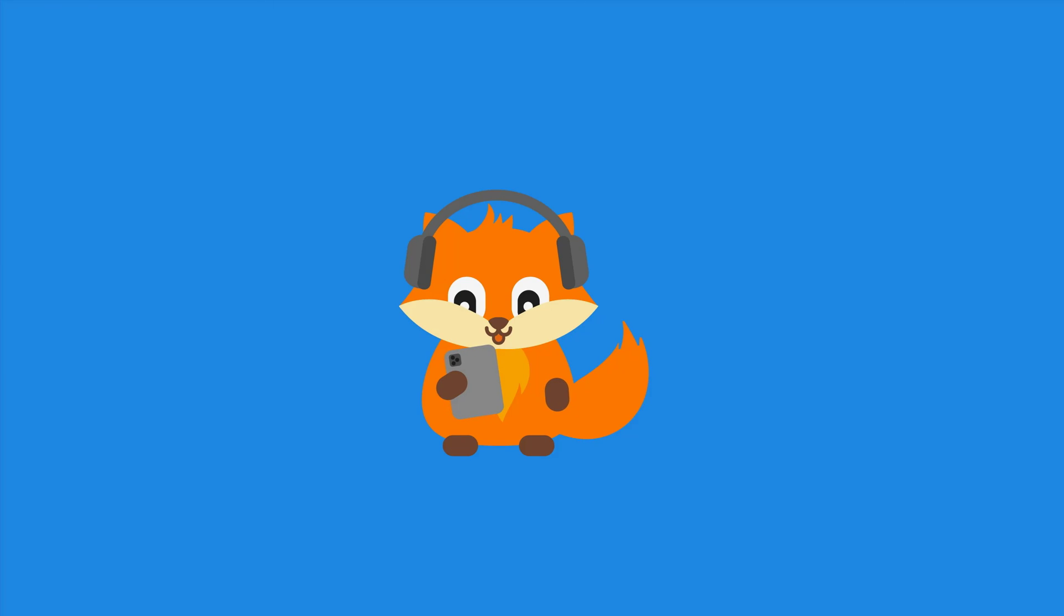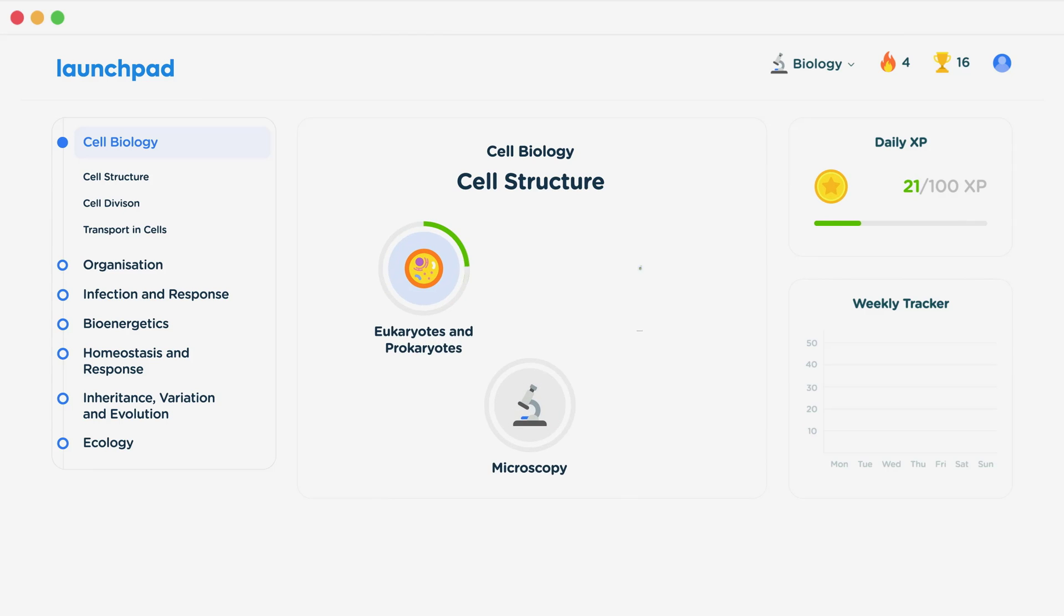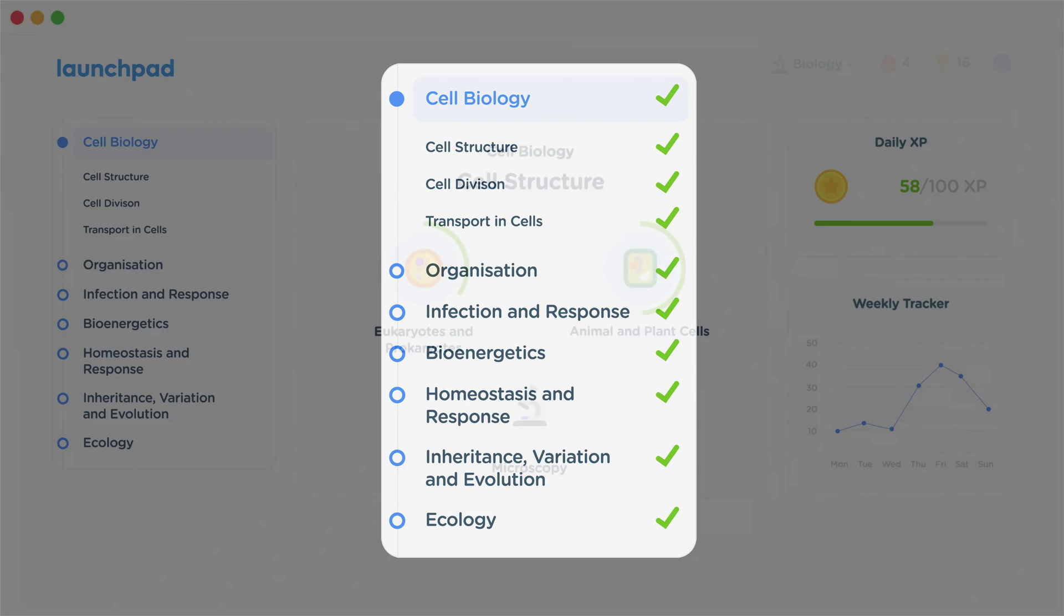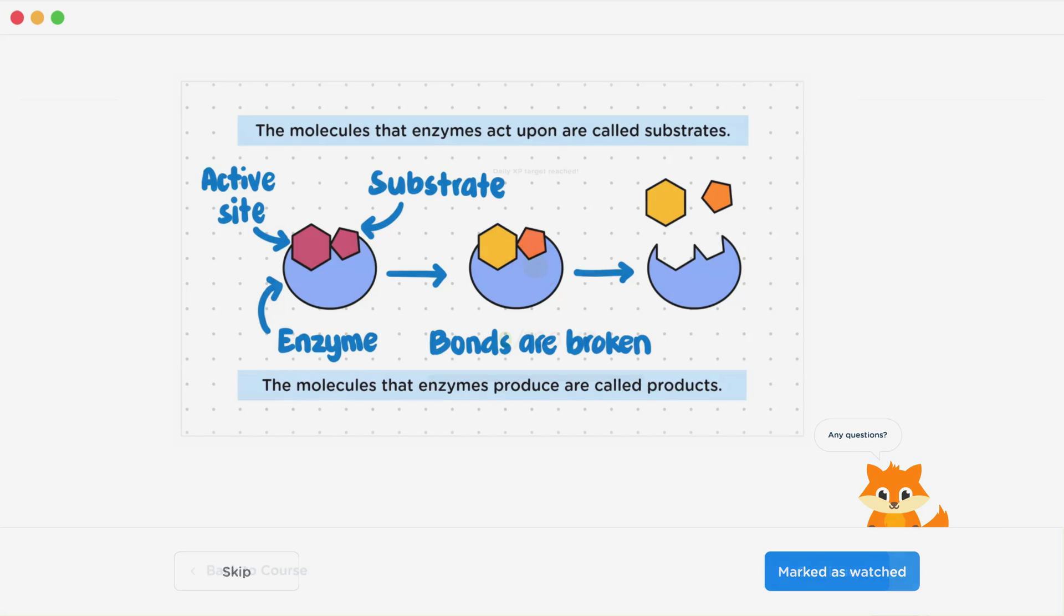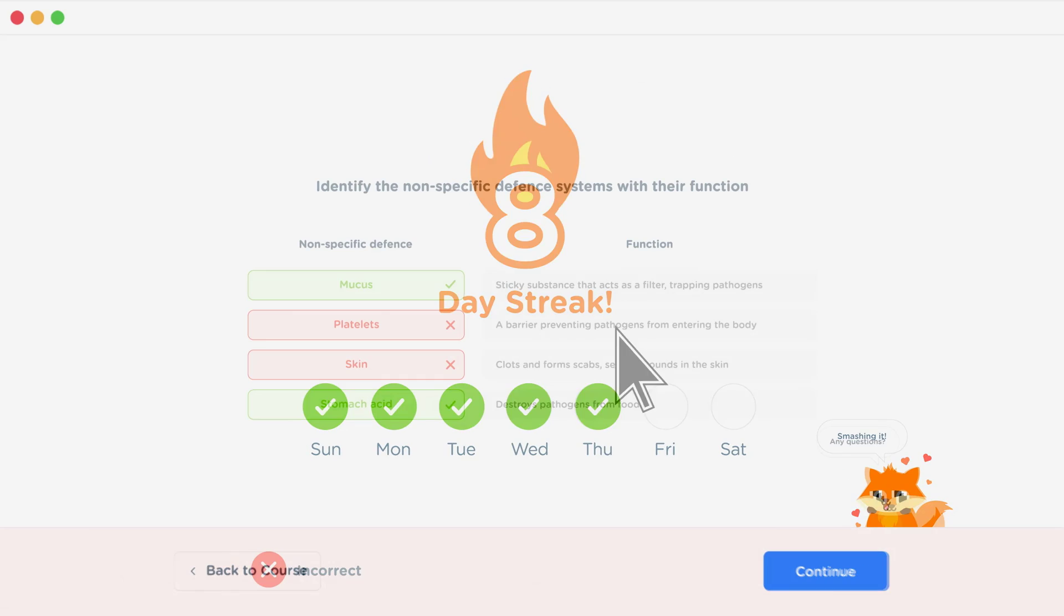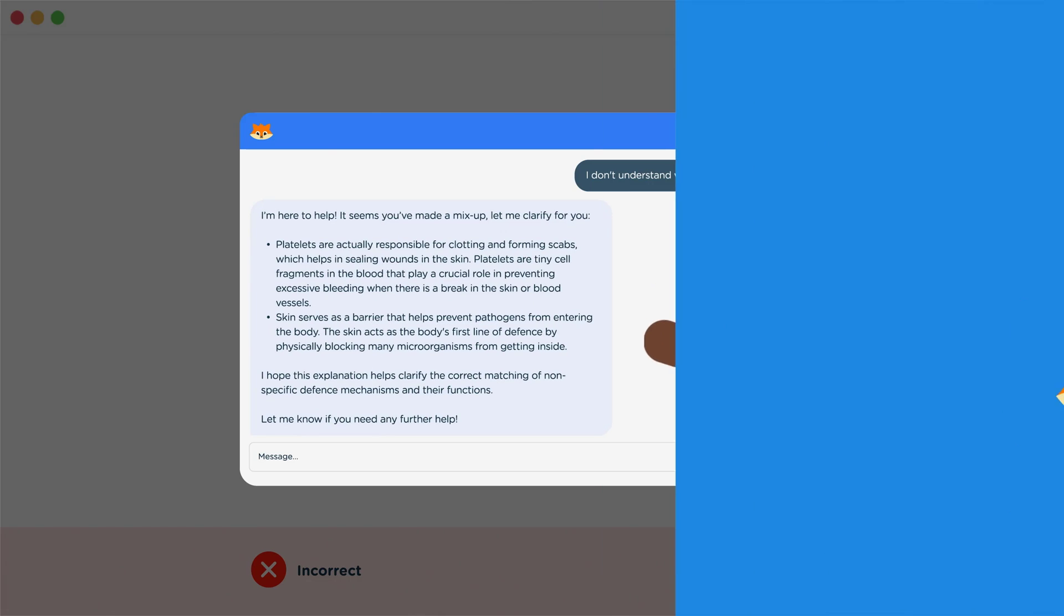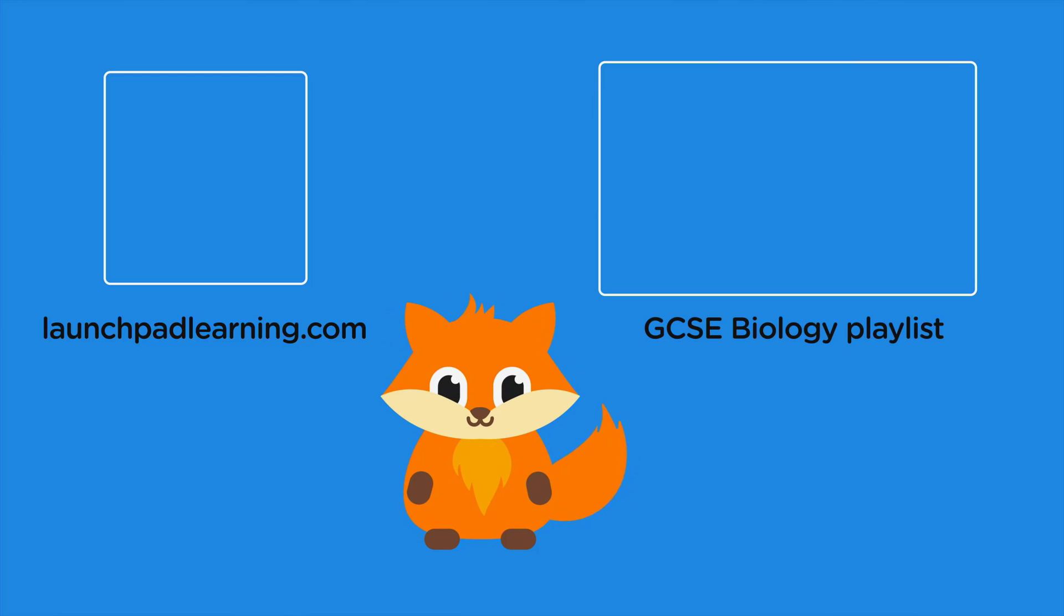Thanks for watching. If you want to take your GCSE revision to the next level, head over to launchpadlearning.com and check out our smart learning platform that's been designed to get you top results in your exams. We cover your whole specification and make revision fun with interactive quizzes, easy to follow videos, and more. You'll be kept motivated by your own AI tutor who's here to support you every step of the way. To check it out for yourself, click here. Or click here to keep watching a selection of the videos from our full GCSE Biology course. See you there!